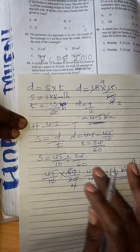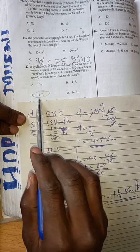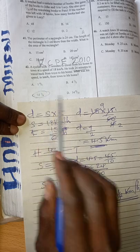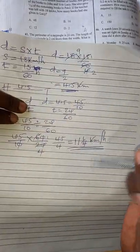That is our answer. Let us confirm whether we are correct. So you see, our answer is choice C, 11 and a quarter kilometers per hour. So our answer is correct.